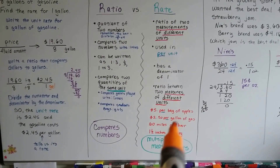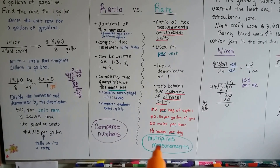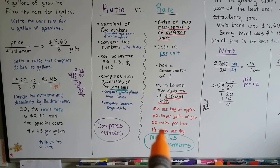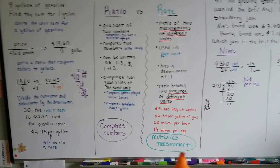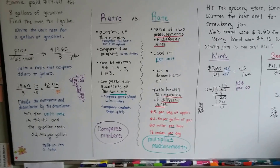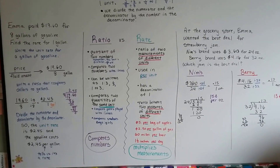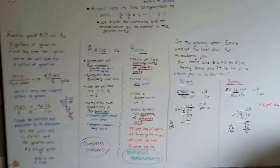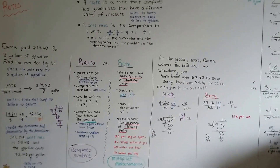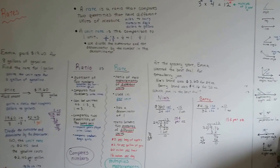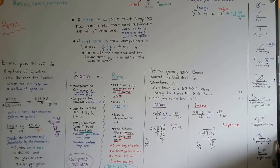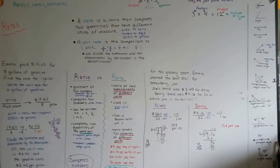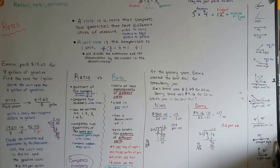You're saying $5 for each bag of apples, or the plant grew 1.5 inches each day — you're multiplying a measurement each day, each bag, each gallon. Hopefully this has cleared up the difference between a ratio and a rate. I know a lot of people have problems with this. I'll see you next video. Bye.